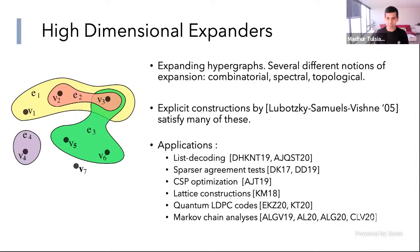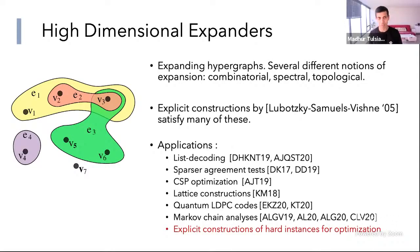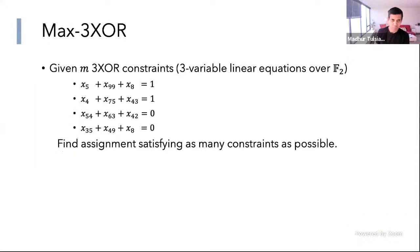Although this is a new area, high dimensional expanders have already found a huge number of applications to many different areas in theoretical computer science. Today, I'm going to talk about their application to constructing hard instances for certain optimization problems. The specific optimization problem I'll be interested in is 3XOR, which is just a system of linear equations over F2. Suppose you are given a system of M linear equations in N variables, each equation having three variables over F2, and the goal is to find an assignment to the variables satisfying as many constraints as possible.